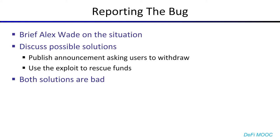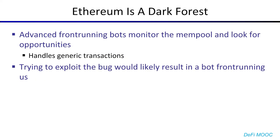One of the solutions we considered was to simply publish an announcement, being extremely vague but just telling users that they should withdraw. However, this is obviously not great because it immediately tips off the attackers that something has gone wrong, and it might take users anywhere from hours to days to see the message. Another option was to use the exploit to rescue the funds ourselves. However, as we talked about earlier, there are such things as front-running bots — in fact, there are some advanced front-running bots which not only monitor the mempool for arbitrage opportunities but handle generic transactions. In other words, they'll try every transaction, see if executing it will give them money, and if so, front-run you. That meant that if we tried to exploit the bug ourselves, we would likely get front-run and lose all the money, which would be very unfortunate.